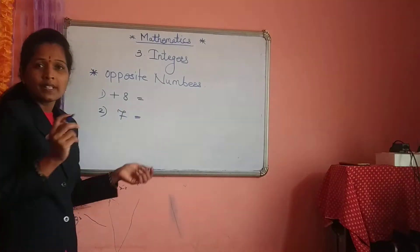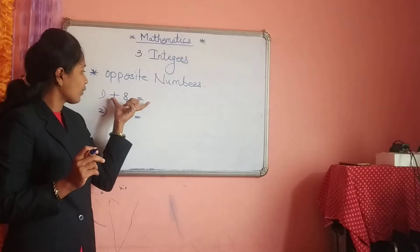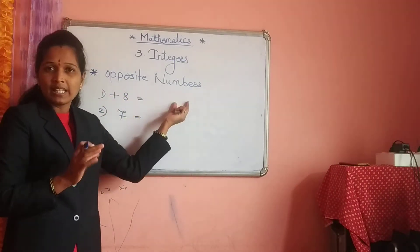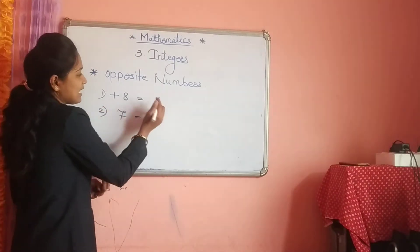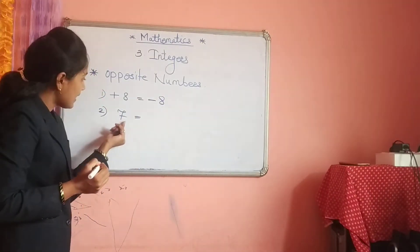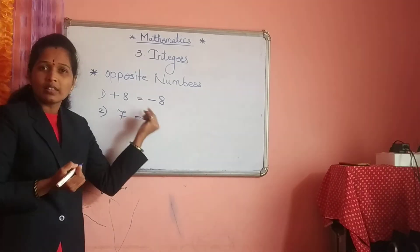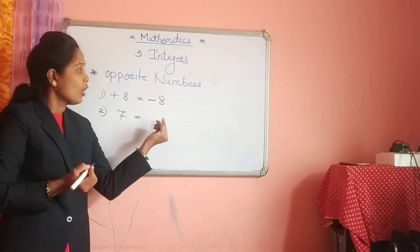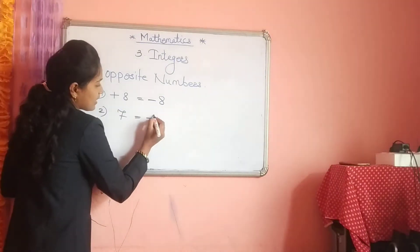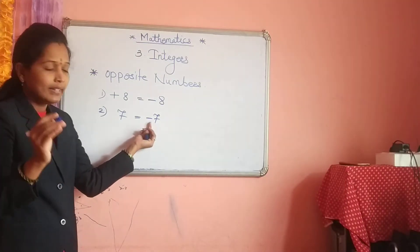The opposite sign of plus is minus. Opposite number means: suppose you have a positive number, you have to write that number in negative form. It means plus 8 is given, you have to write down minus 8. And 7 is given — 7 is positive — so you have to turn that number into its opposite number, which is minus 7. So minus 7 is the negative number.